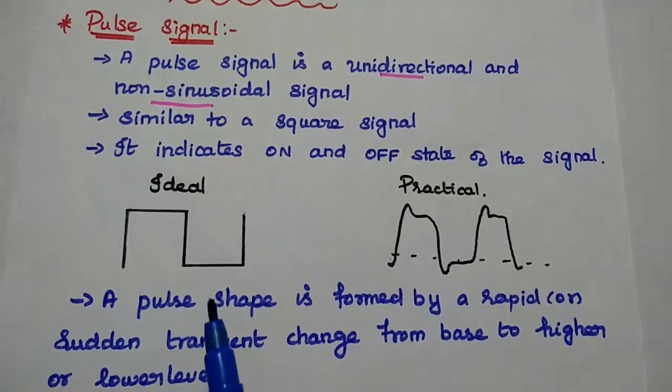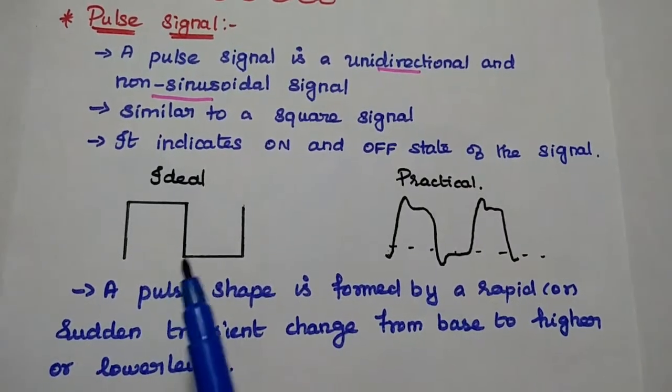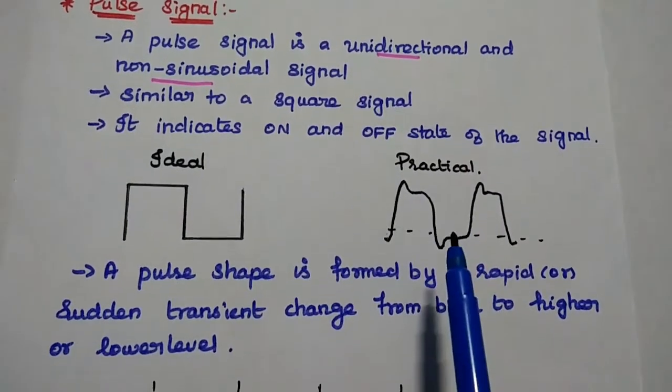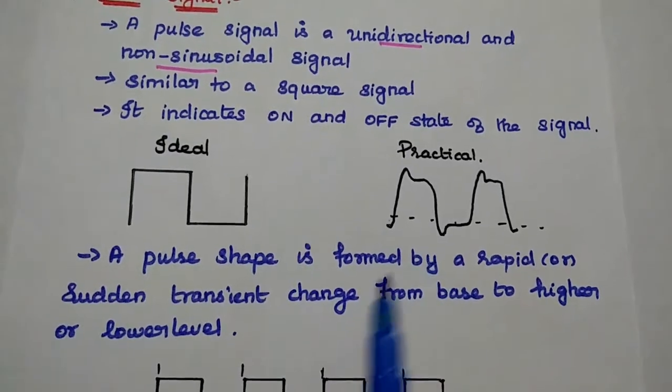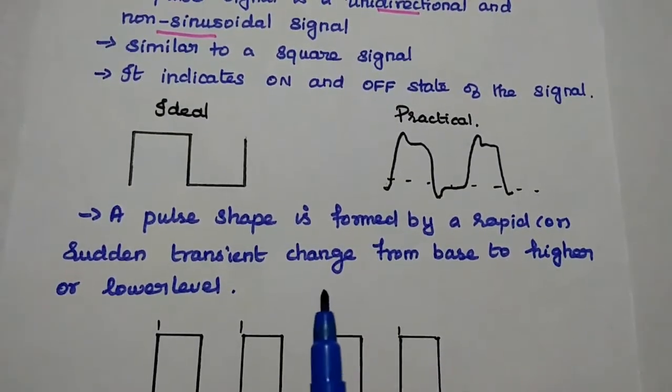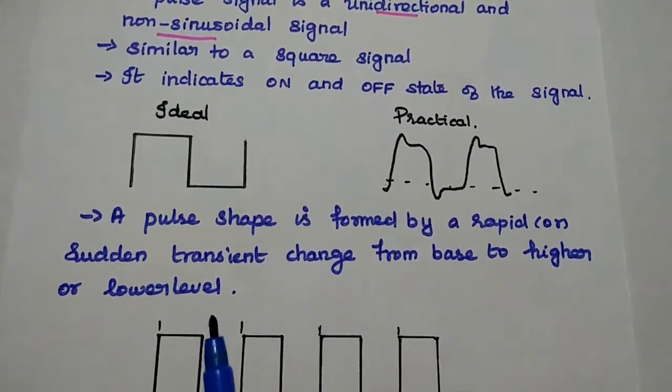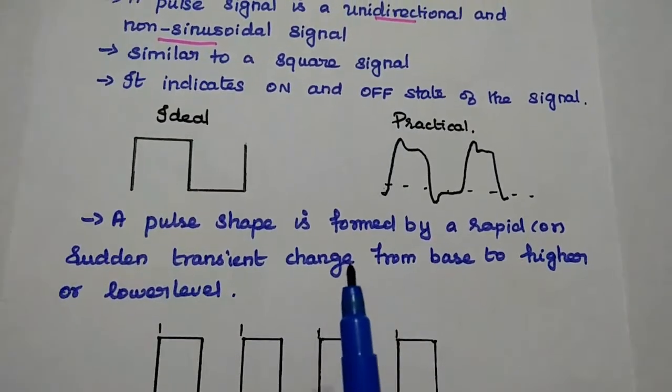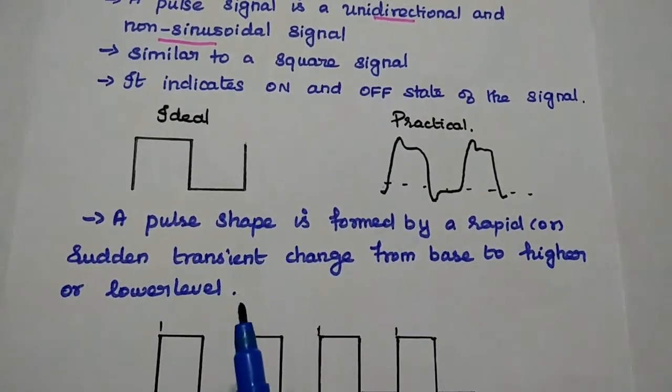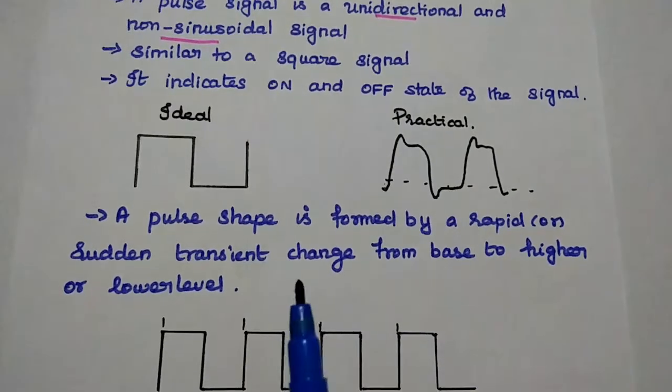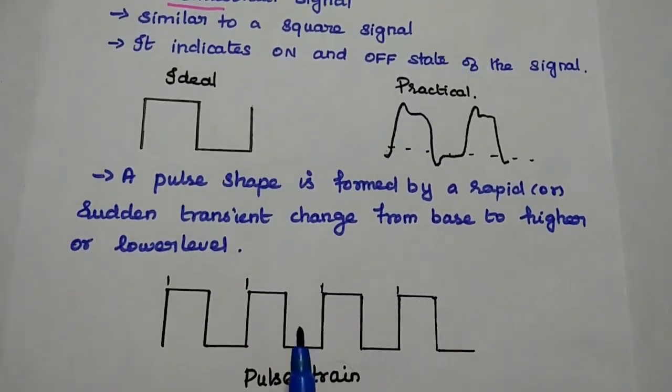This is the ideal form of pulse signal which has sharp edges. This is the practical form of the pulse signal. The pulse shape is formed by a rapid or sudden transient change from base to higher or lower level and return to the base level. That is called a pulse signal.